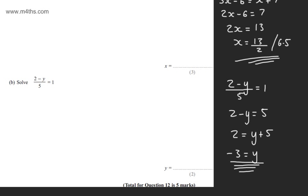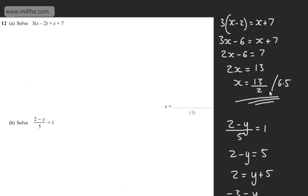If you're unsure on your answers, just put them back in and check that they work. So if we look at this one, 2 minus minus y, that's going to give me 2 + 3. 2 + 3 = 5. 5/5 = 1. You can do exactly the same here.